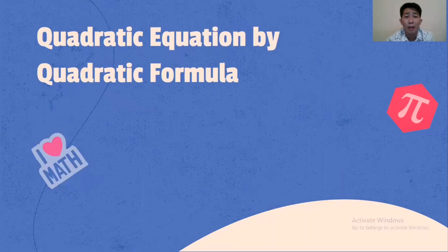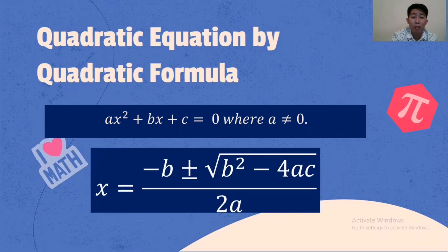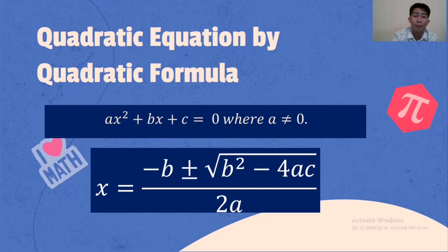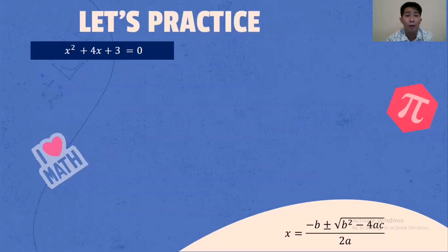So let's now try to solve a problem using Quadratic Equation by Quadratic Formula. Given the standard form AX squared plus BX plus C equals 0, where A is not equal to 0, our formula is: X equals negative B plus or minus the square root of B squared minus 4AC, all over 2A. That is the formula we will use to solve Quadratic Equations.